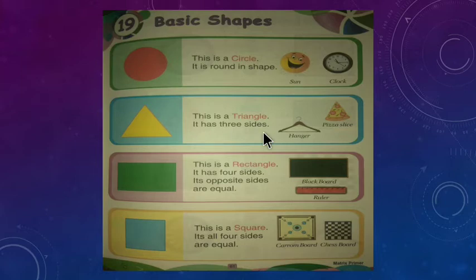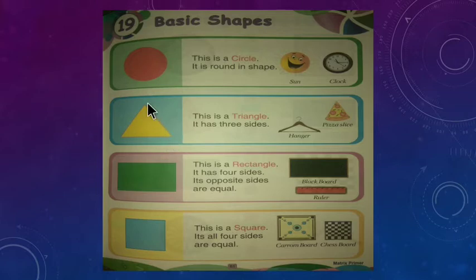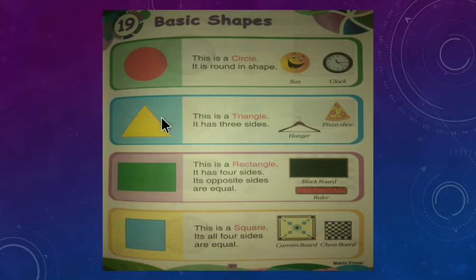Let's count the sides. This is one side — ye ek side hai. Ye doosri side hai, and ye third side hai. Kitni sides hain iski? One, two, and three. Three sides se milke hamaari triangle shape bani hai.